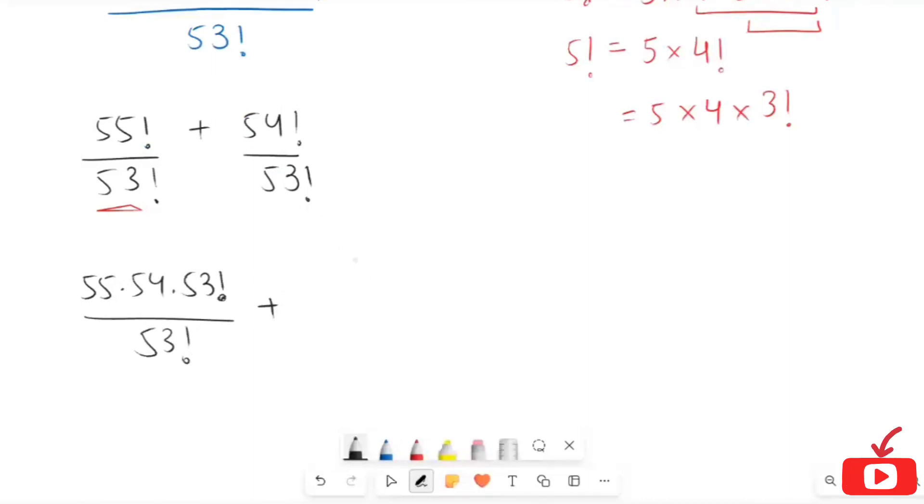Here in the same way, the factorial of 54 is 54 times 53 factorial. Here again I end up with 53 factorial because our denominator is 53 factorial, so here I end up again with 53 factorial.